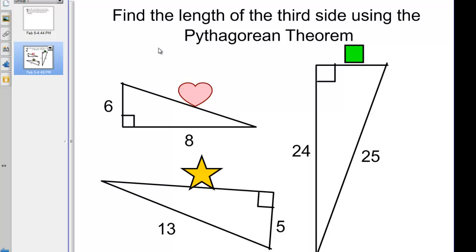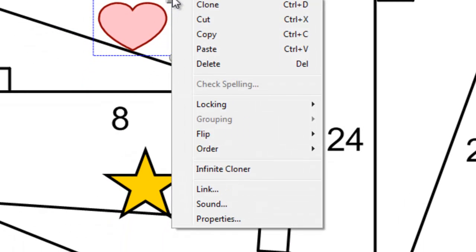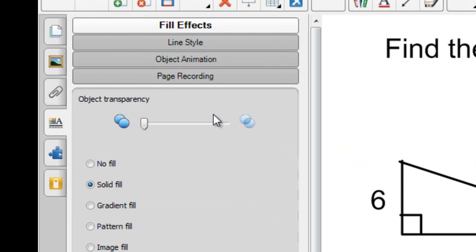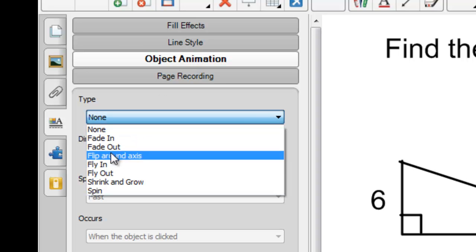We can make this a little fancier if we use the technique of not just drawing a shape on them, but clicking on the shape, going to Properties under the drop-down menu, and choosing Object Animation. I want this object to fly off the screen when I touch it, so I'm going to choose under Type, Fly Out.